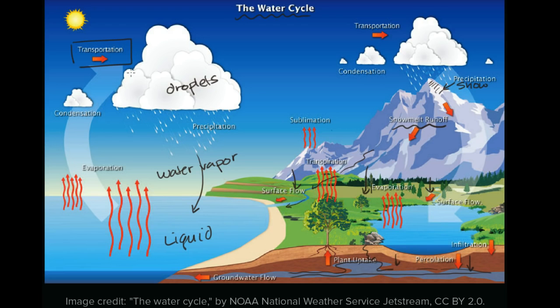And so that in general is the water cycle: you have evaporation, it condenses into clouds, it eventually precipitates, and it keeps going round and round and round.